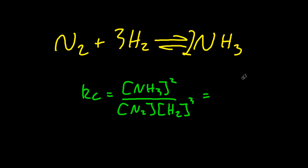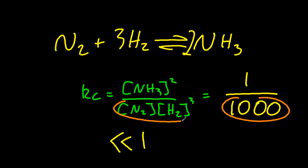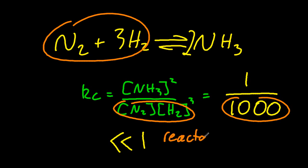Alrighty, now let's look at the opposite. Let's say that my Kc is one over a thousand. So that means that there's loads and loads of reactants, less than one. So the reactants are favoured in this case.